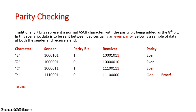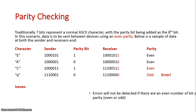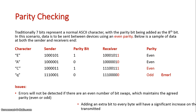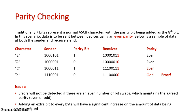We need to understand that there are some issues with parity checking. First, errors will not be detected if there is an equal number of bit swaps, which would maintain the actual parity of the transmission. Secondly, adding an extra bit to every packet or byte greatly increases the amount of data that needs to be transmitted.